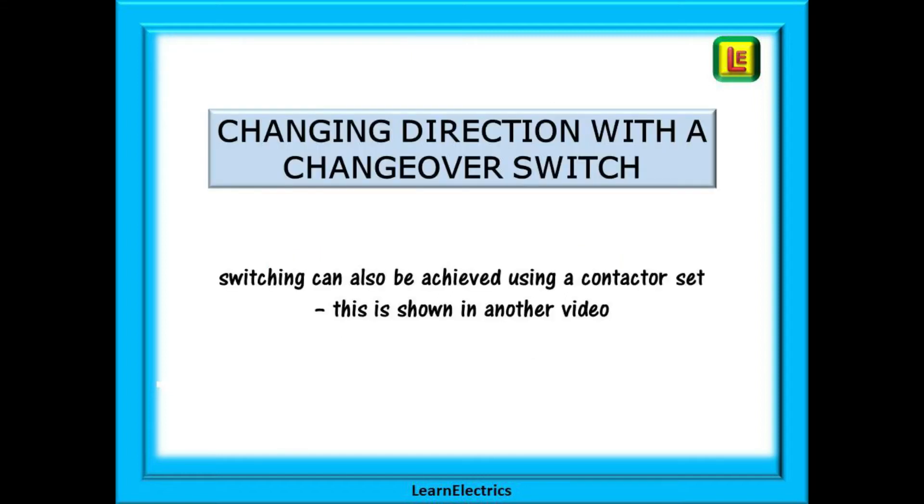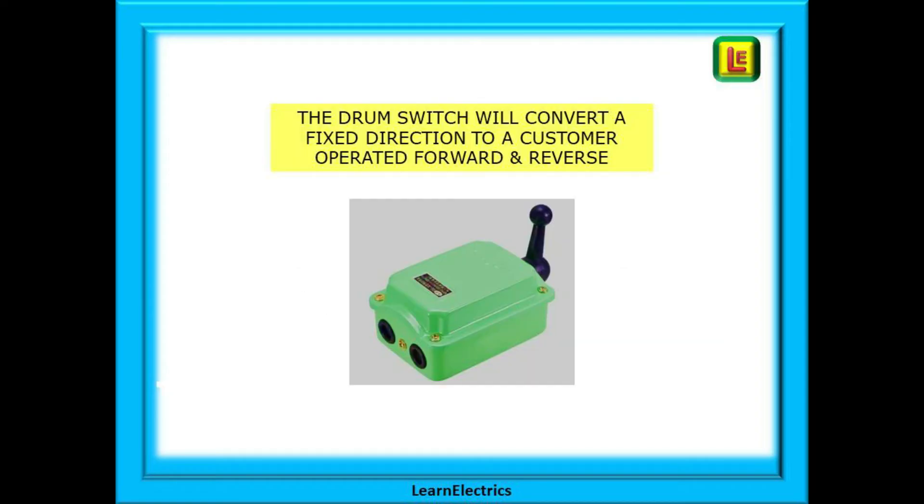The second method of changing rotation is to install a changeover switch, and this is much more user-friendly. The customer does not need to involve an electrician each time the motor needs reversing. The basic drum switch will convert a fixed direction motor into a customer operated device.